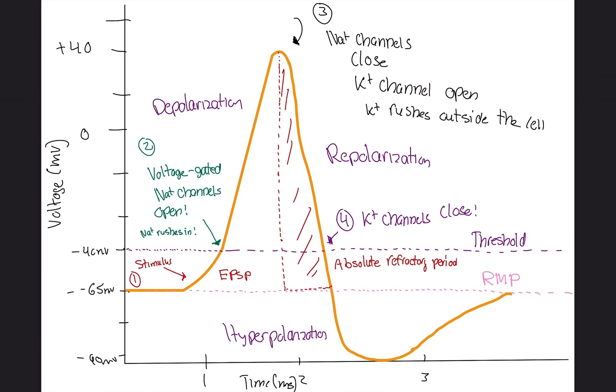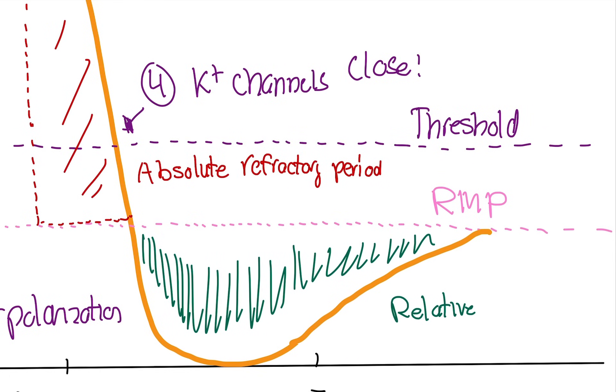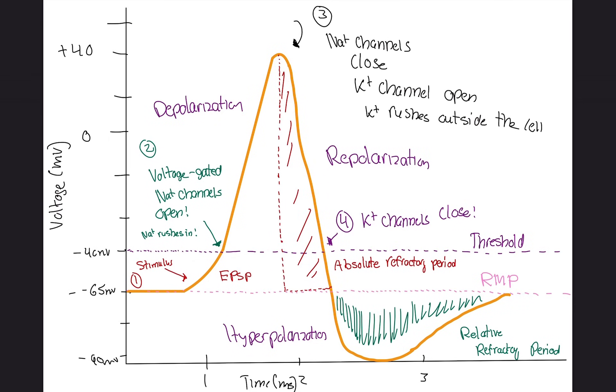Now we have the relative refractory period, which is this area, this hyperpolarization area, all the way to resting membrane potential. This is called the relative refractory period. What this is saying is, yeah, if we get enough stimulus, I suppose we can fire another action potential, but we need a lot of stimulus. So it is saying it is possible to have another action potential fire. It is unlikely, but we are able to, it is rested enough where we can fire another action potential.